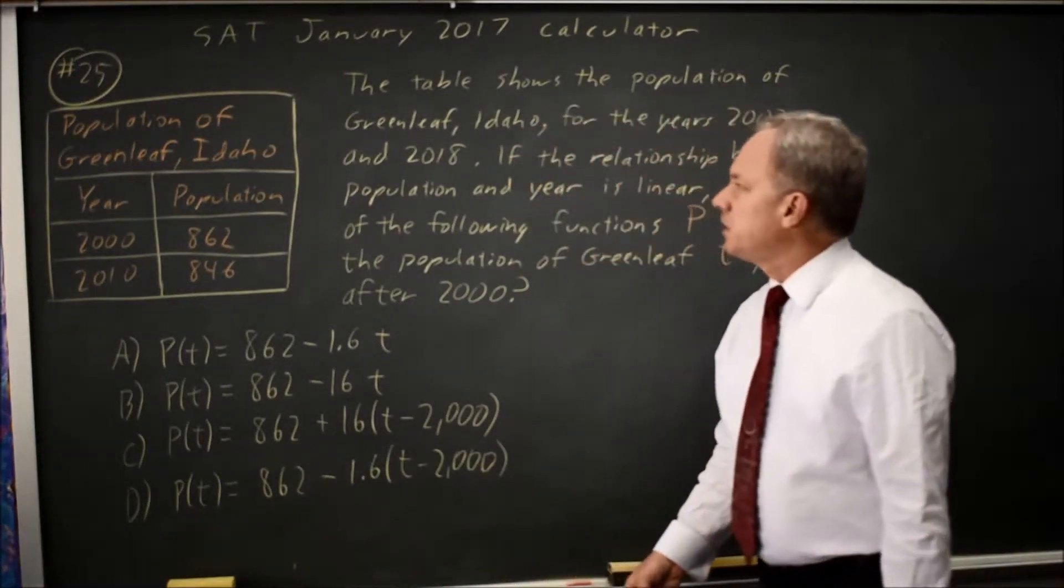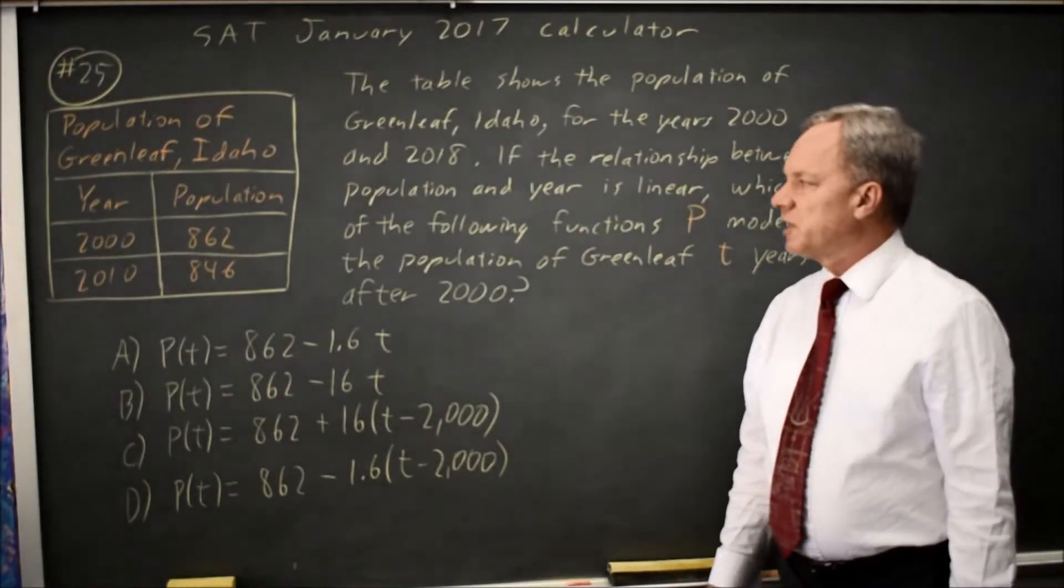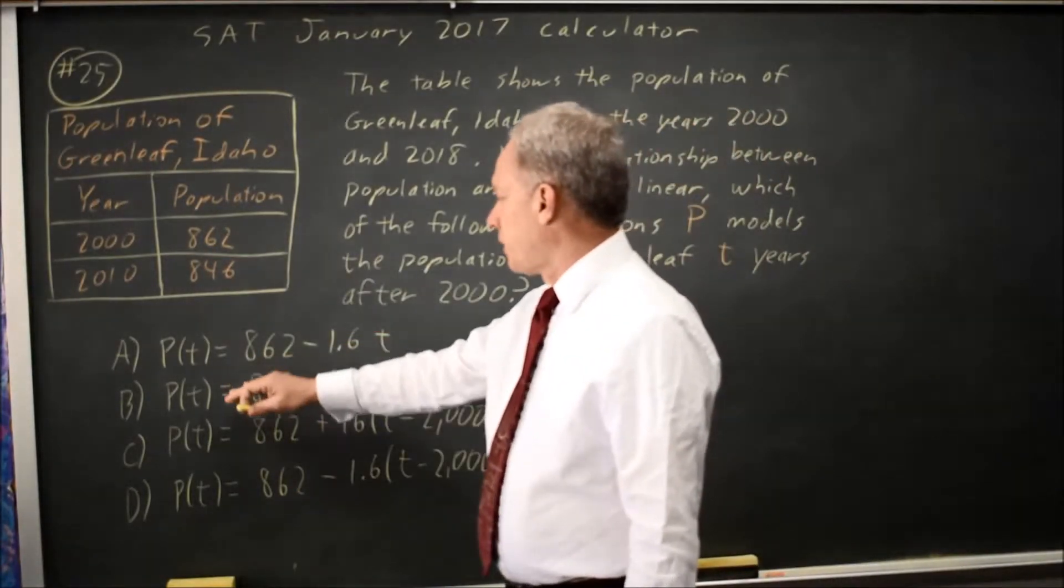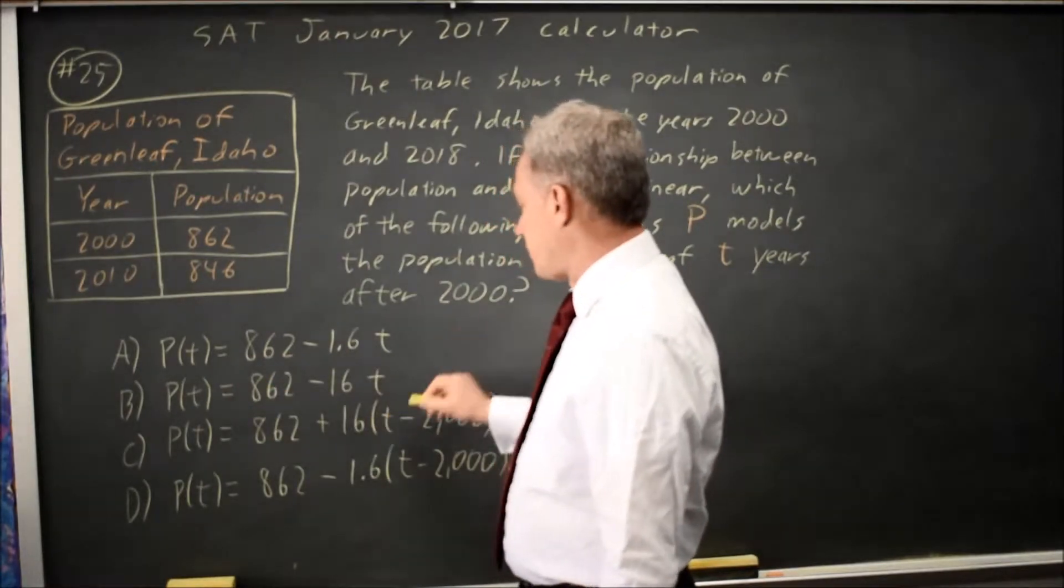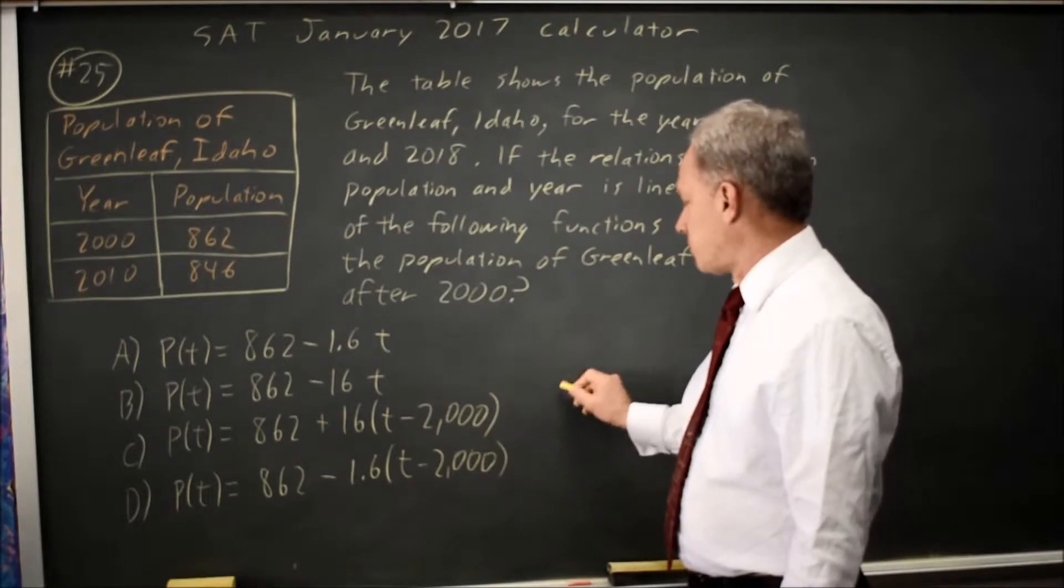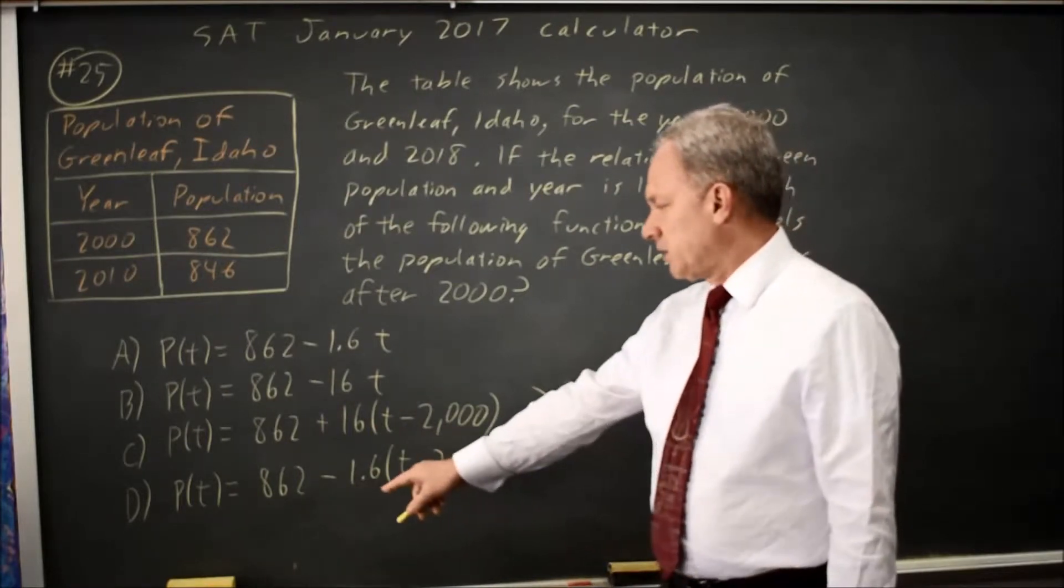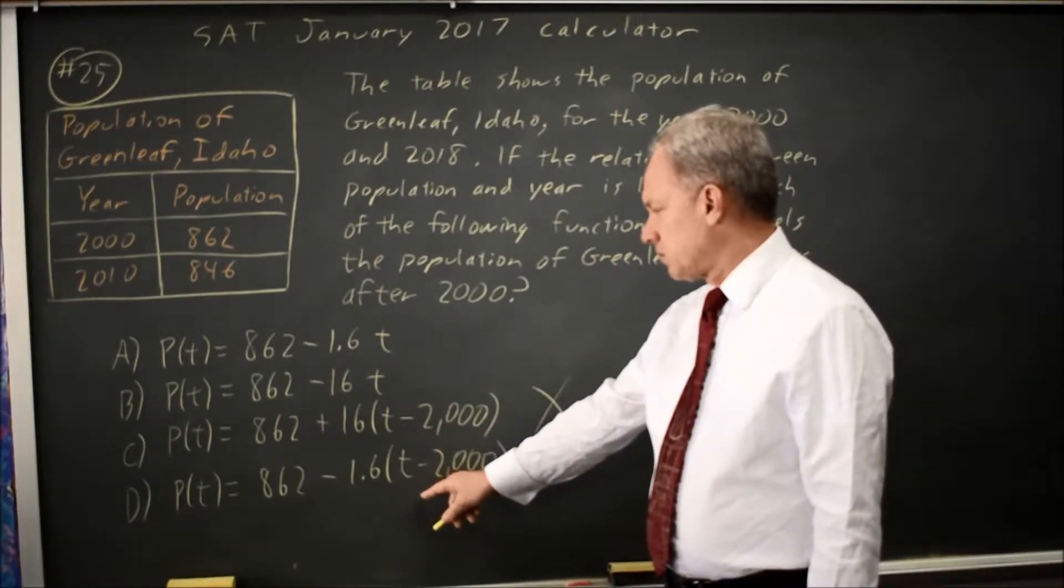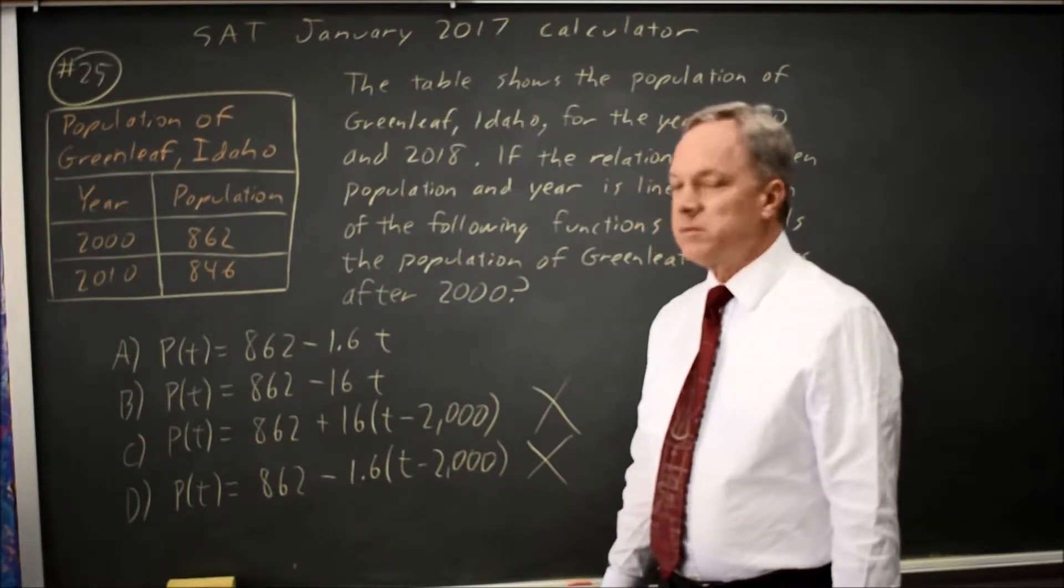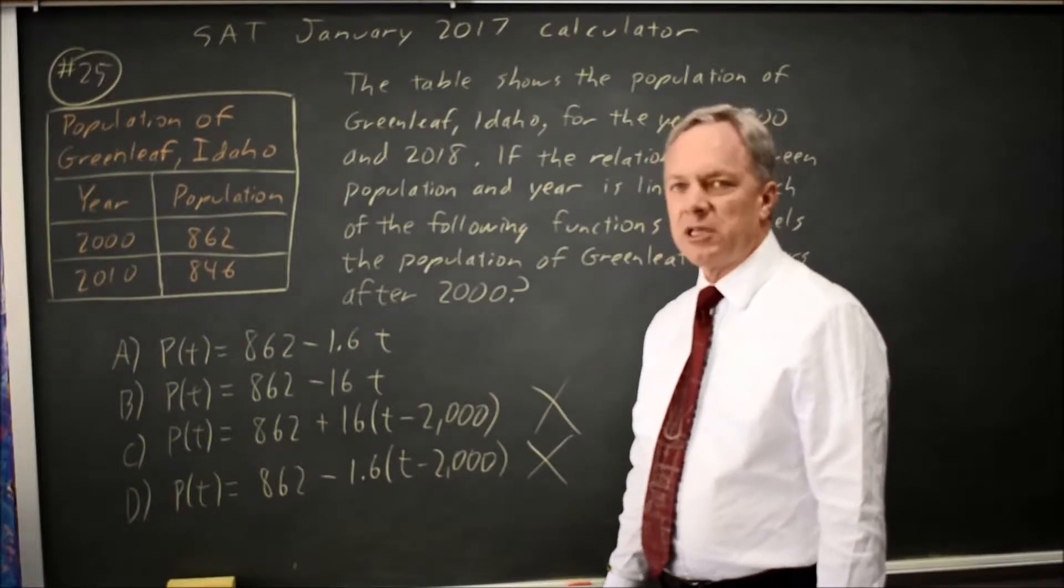The correct equation in year zero should give us the population of the year 2000 which is 862. So A works for that, B works for that, C gives you 862 minus a huge number, so C is wrong, and D gives us 862 plus a huge number, so D is wrong. The correct answer would be A or B.